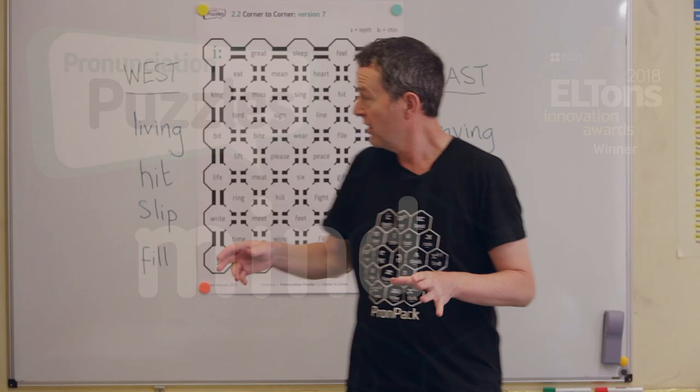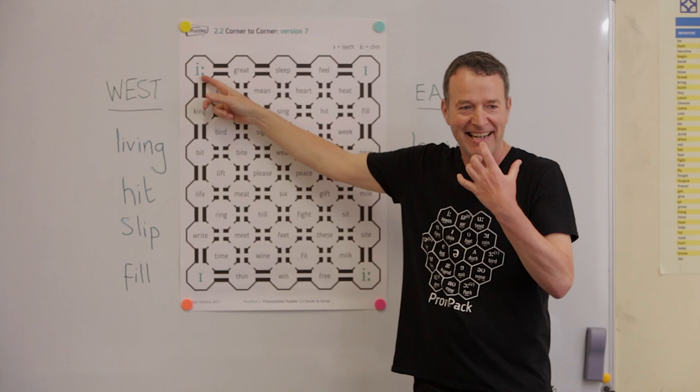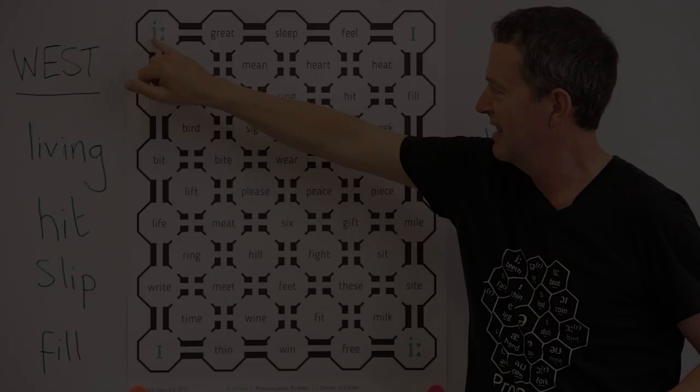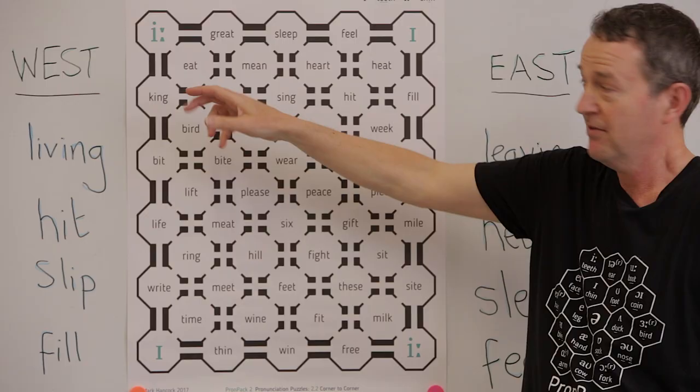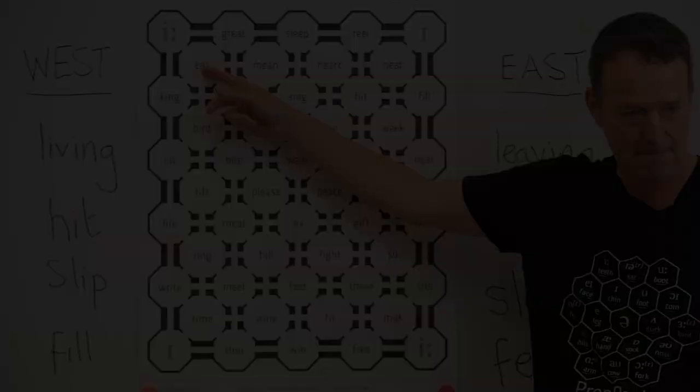You have to start here and finish here, so all of the words must have 'ee', right? For example, 'great' — does this have 'ee'? No, so you can't go that way. Then there's this possibility: 'eat'. Does that have this sound? Yes! So you draw a line from here to 'eat'.